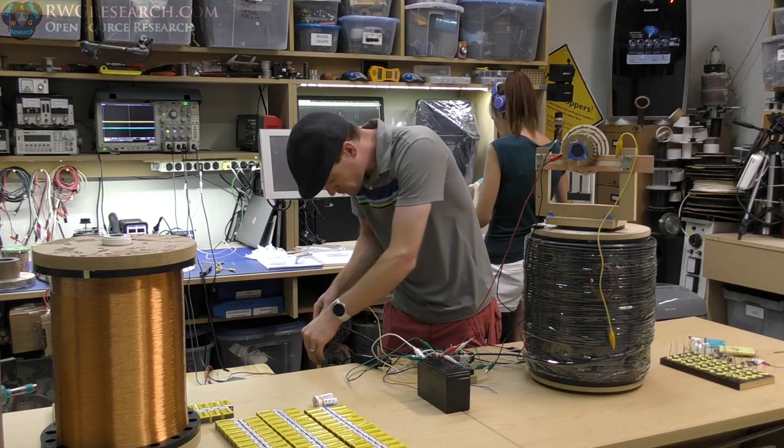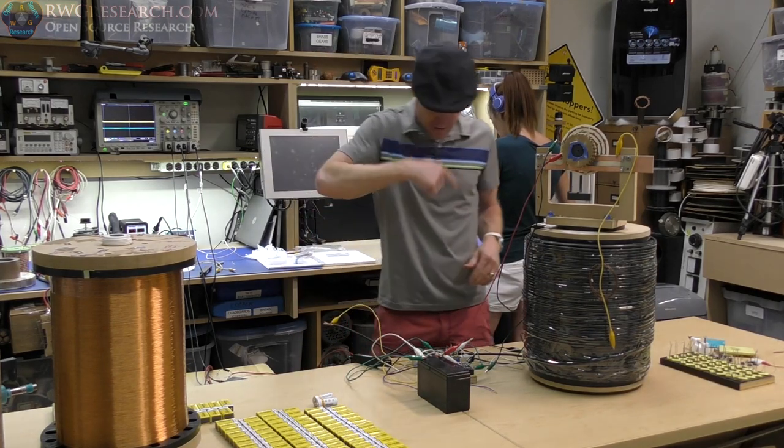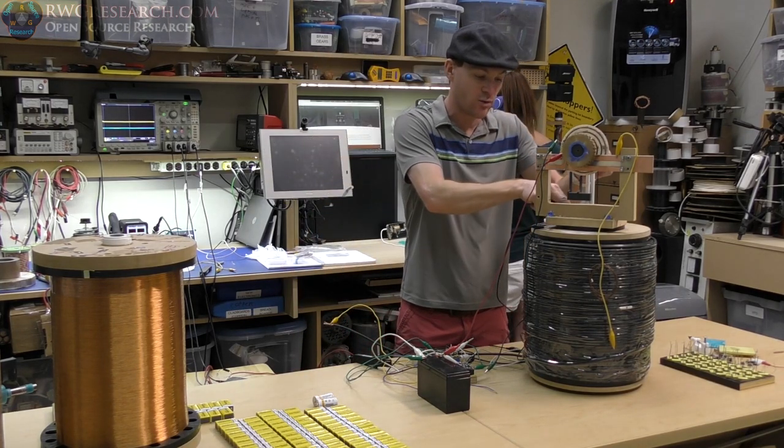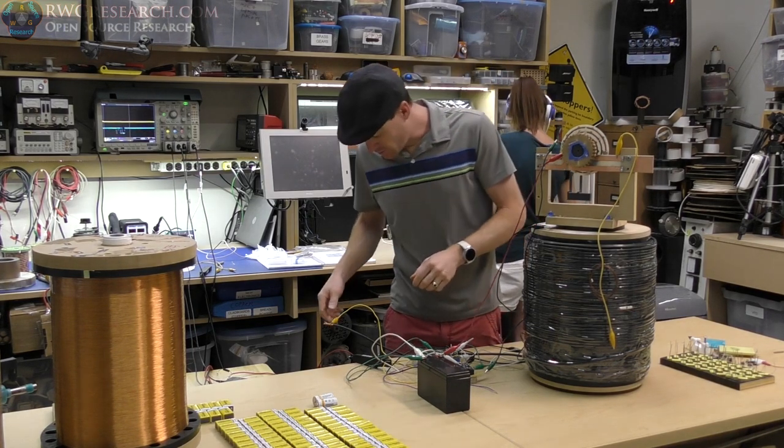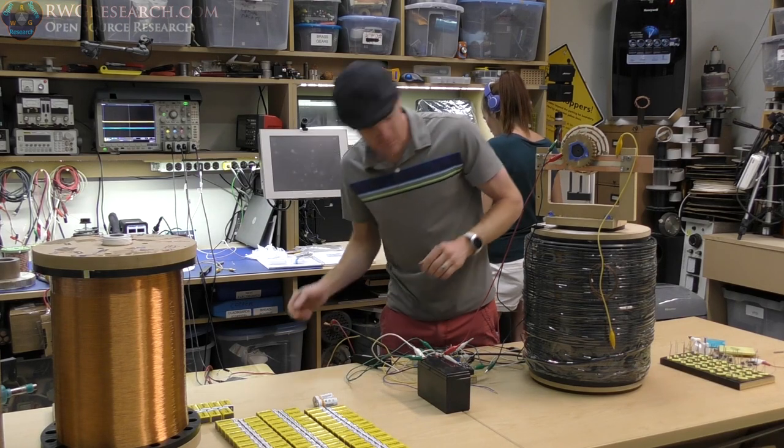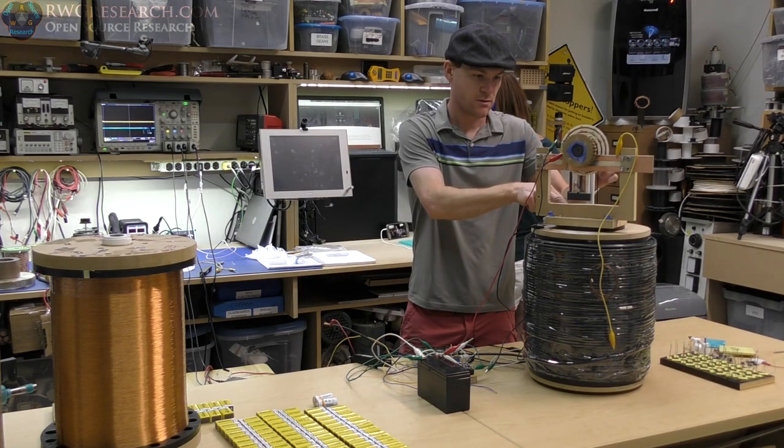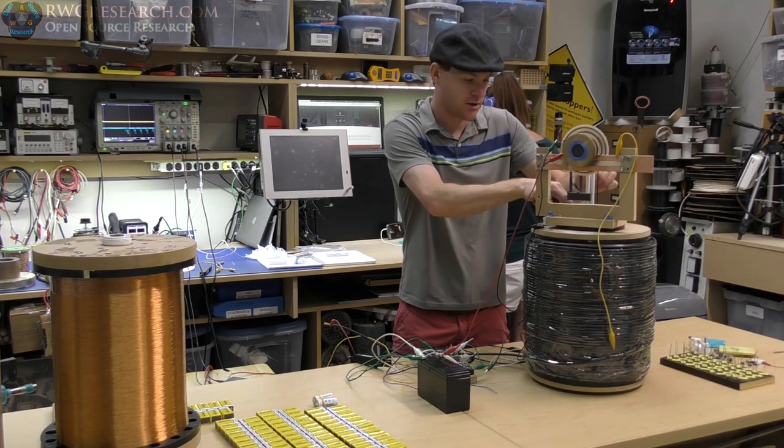If I connect the outside coil, then I'm shorting this across the outside coil. The outside coil will make a magnetic field. And as long as it's in the same polarity, it will actually aid in the rotation.